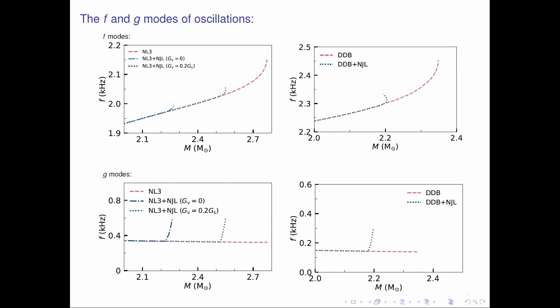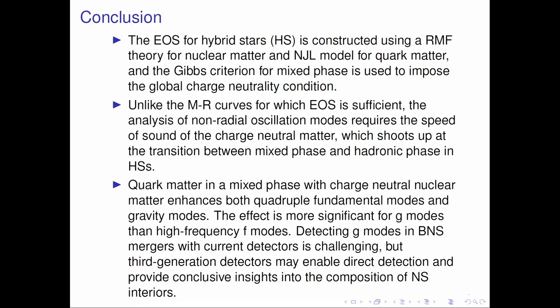Here in the top panel I show for two types of equation of state from the nuclear sectors. I plot the F-mode frequency with respect to neutron star mass. In the bottom panels I plot the G-mode frequencies with respect to mass. You can see that the G-modes are basically enhanced in the mixed-phase configurations. So precise measurements of these modes can tell whether a mixed-phase exists or not.